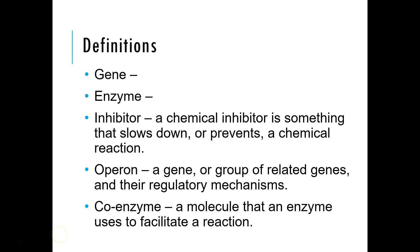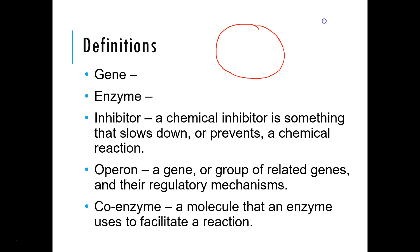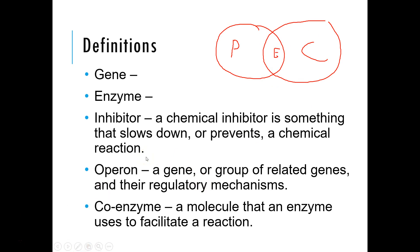Let's do some definitions. A gene is a continuous stretch of DNA that codes for a protein. An enzyme is a catalyst that is also a protein — think of a Venn diagram: in the middle where proteins and catalysts overlap, we have enzymes. Not all proteins are catalysts, but all enzymes are proteins and catalysts. An inhibitor is a chemical that slows down or prevents a chemical reaction. An operon is a gene or group of related genes and their regulatory mechanisms — exclusive to bacteria. A coenzyme is a molecule used to facilitate a reaction.